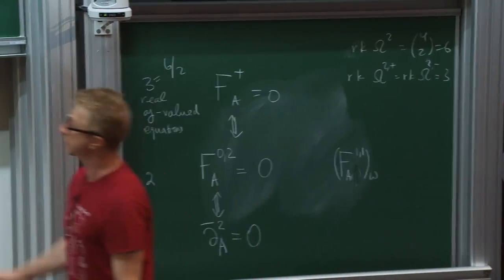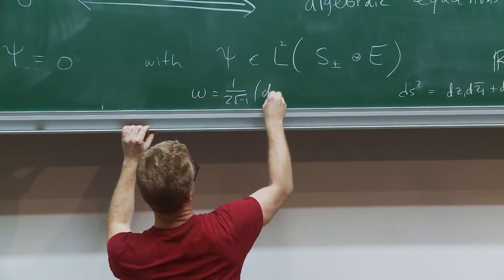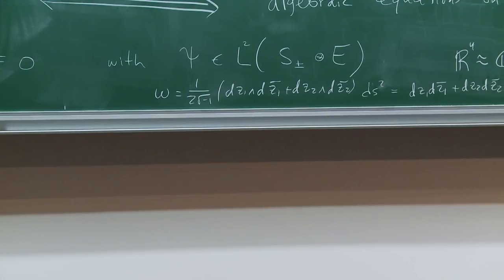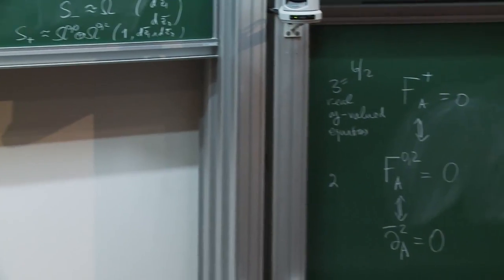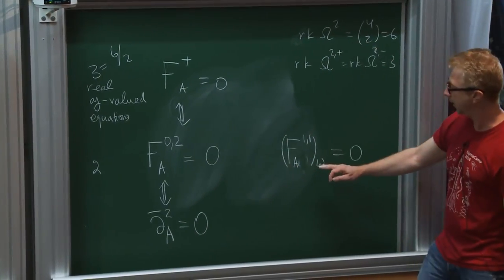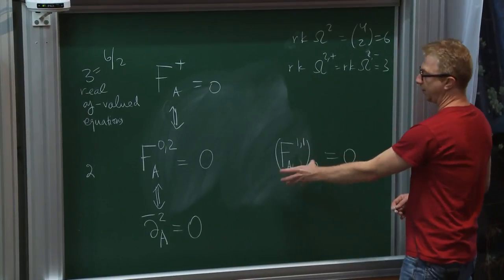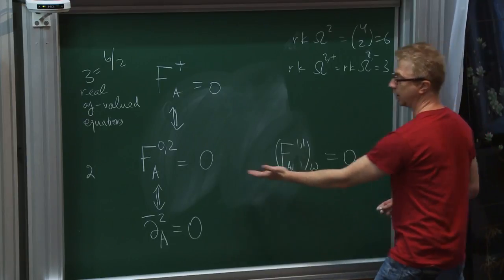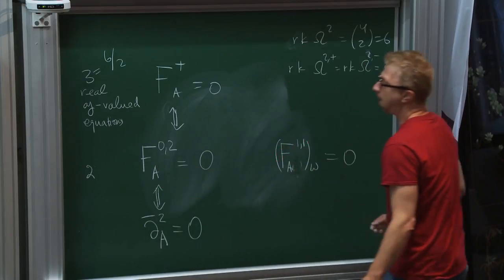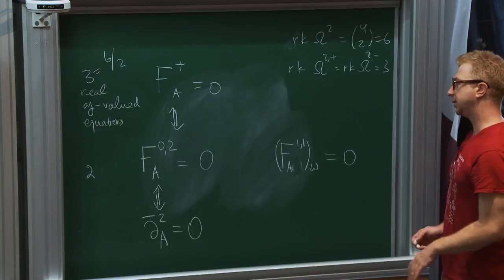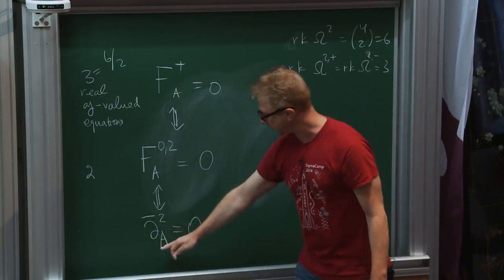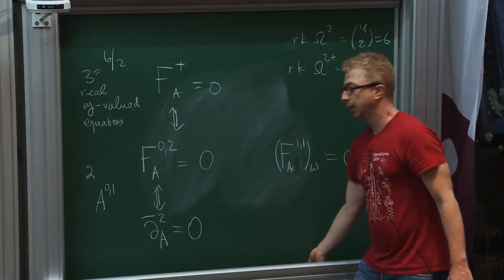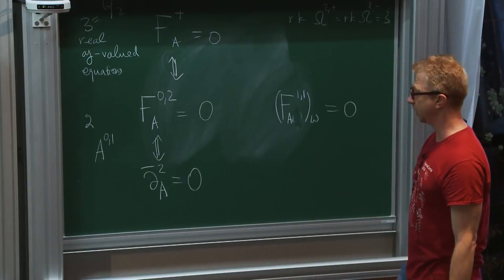The equation F_{0,2}=0 is invariant under complexified gauge transformations, while the Kähler component equation is not. People sometimes use the second equation to fix the non-compact part of complex gauge transformations: instead of imposing both equations and dividing by complex gauge transformations, you impose the first equation and divide by complexified gauge transformations.